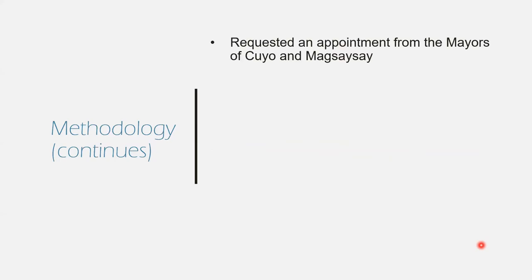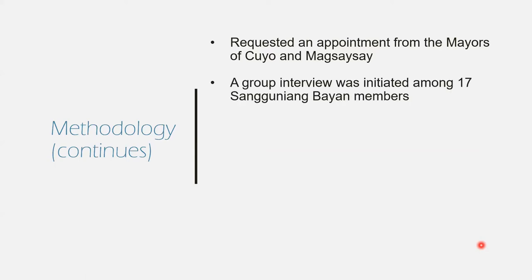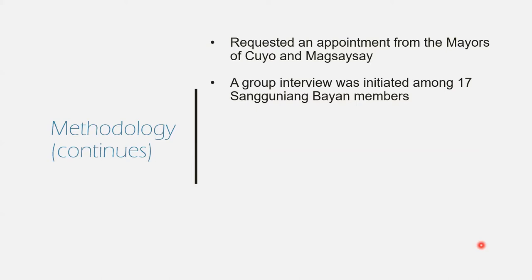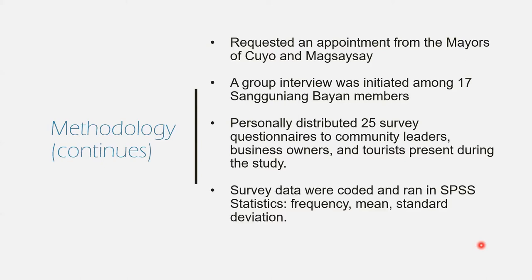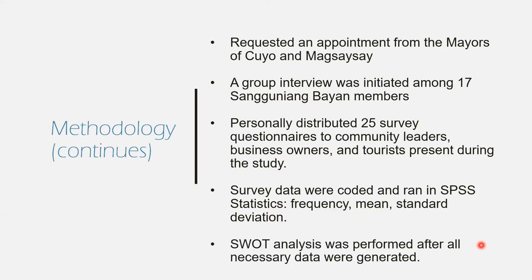To assess the present condition of Cuyo Islands, I collected data from interviews and survey questionnaires. Only 17 Sanggunian Bayan members participated in the interview. For the survey, I distributed 25 questionnaires to community leaders, business owners, and tourists. After collecting all the data from my site evaluation, interview, and survey, I started generating the data. I used the ranking method for site evaluation to identify sites with highest scores. For the interview, I coded and grouped similar kinds of information together. For the survey questionnaire, I ran the data in SPSS to get the frequency, mean, and standard deviation. A SWOT analysis was then performed after all the necessary data were generated.